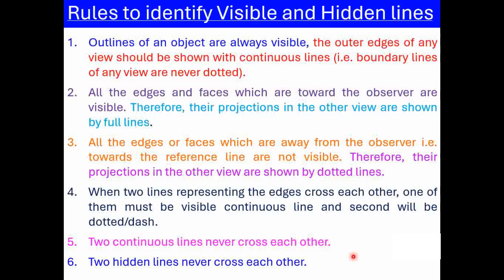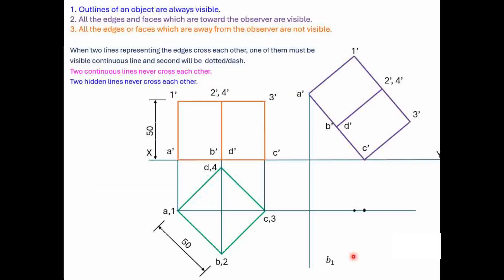Let's see how these rules are applicable to complete a diagram in a projection of solid. As a reference, a single two-stage numerical is used where one axis or edge of the object is inclined — meaning only one inclination is considered. The first, second, and third diagrams have been completed, and while completing the fourth diagram, that is the final diagram, these rules are applied.